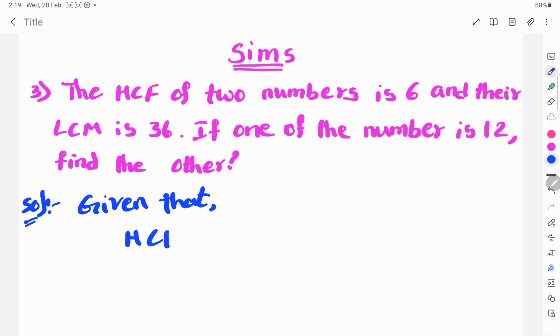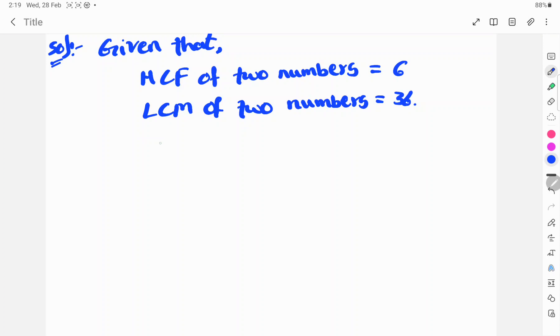What are given? HCF of two numbers is 6, LCM of two numbers is 36, and one number is 12. You need to find the another number, say X.